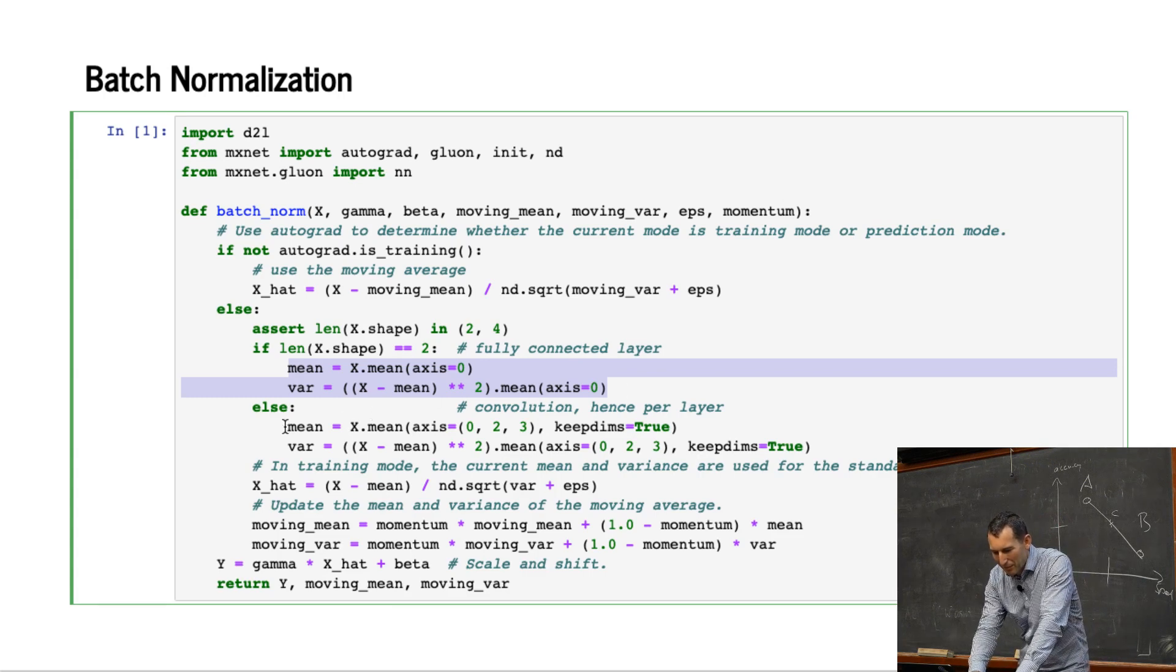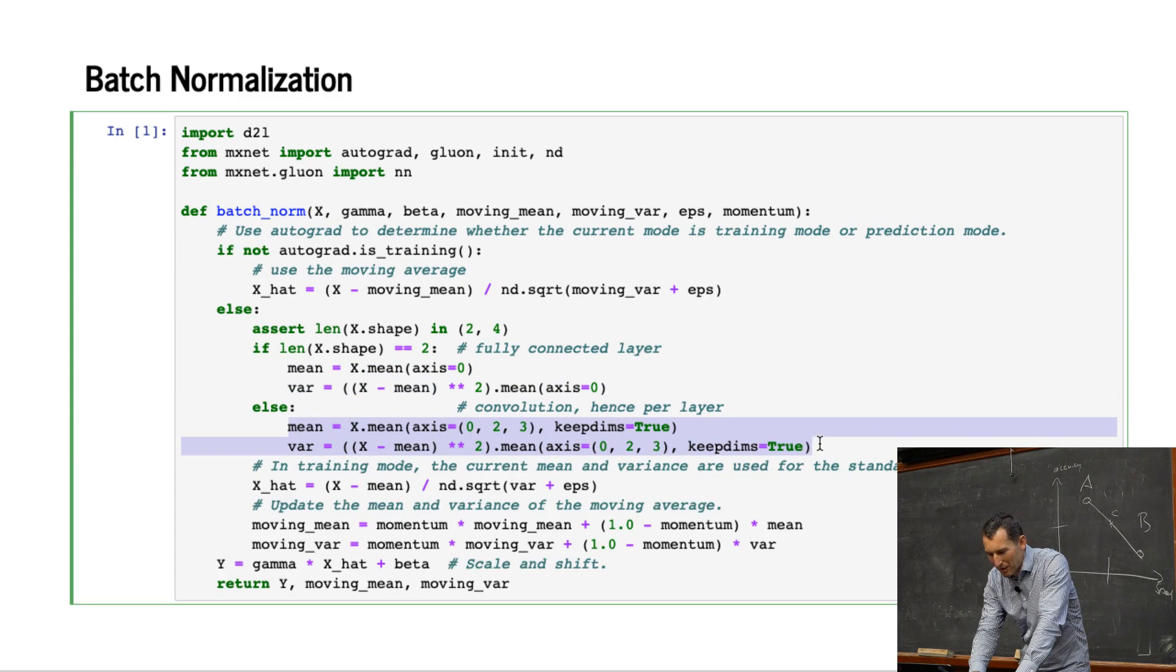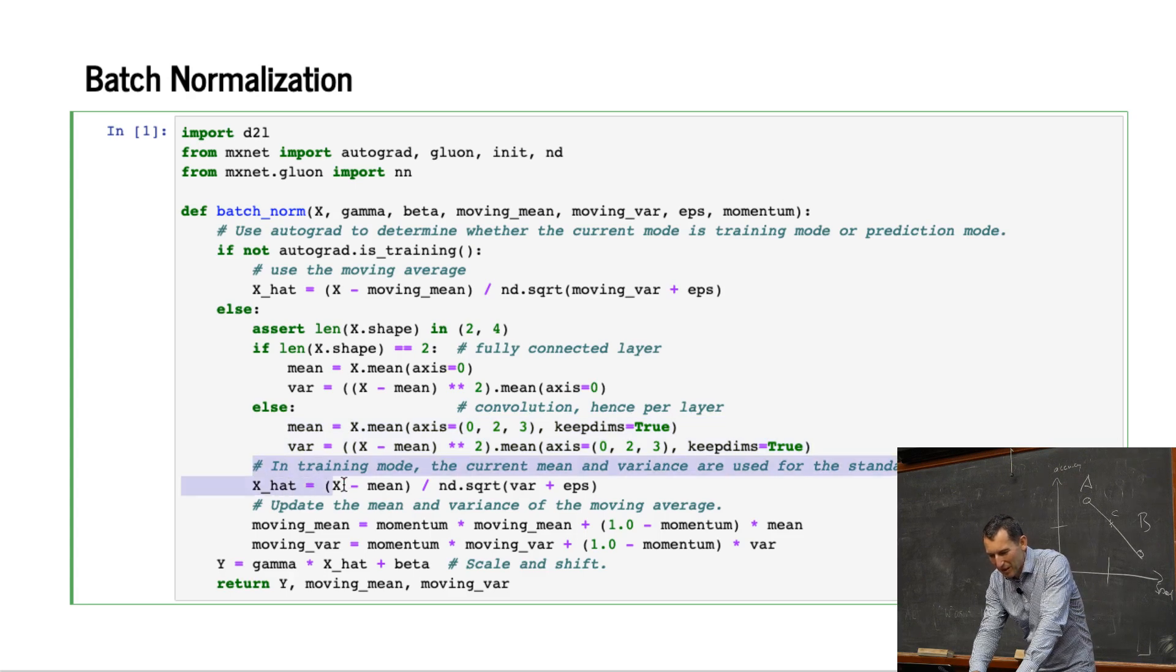Now, if we have a convolution, then I need to compute the mean while preserving all the other axes, namely 0, 2, and 3. And I keep the rest. So basically, before that, we just had axis 0, now we have axis 0, 2, and 3. And then I just normalize appropriately.